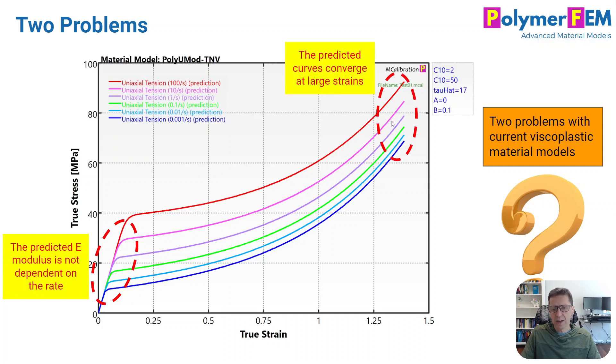And the second issue is related to large strain response. At large strains, these types of viscoplastic materials tend to have stress-strain curves at different strain rates that kind of converge together into one curve at really large strains, almost independent of the strain rate. And that's not always what happens in real tests.